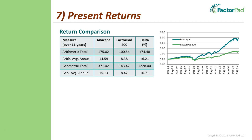Monthly active returns are simply portfolio return minus the benchmark return. Institutions may be less impressed with long look-back periods because it hides periods where active returns suffered — they will want you to explain when you outperform and when you don't. Demonstrate that across different market cycles, because no manager is infallible and every manager has hot streaks and cold spells. If you get ahead of this, you will earn credibility and differentiate yourself.